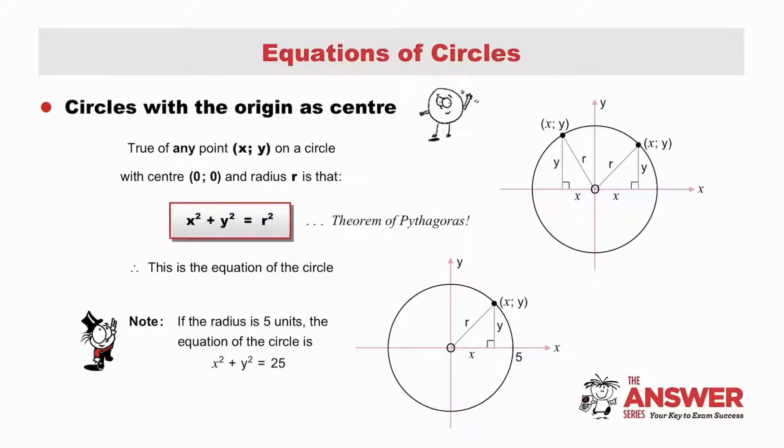We find that true of any point (x, y) on the circle, the square of x plus the square of y is equal to the square of r. x squared plus y squared equals r squared, by the theorem of Pythagoras. This is the equation of the circle, and all one needs to determine this equation is the radius.